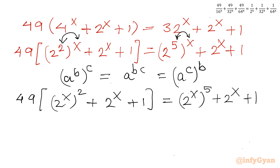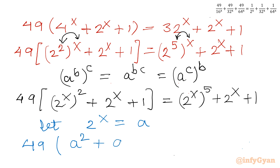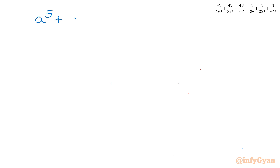Now it is substitution time. Let 2^x equal a. So our equation converts into variable a: 49 times (a^2 + a + 1) equal to a^5 + a + 1. Let me rewrite: a^5 + a + 1 equal to 49 times (a^2 + a + 1).